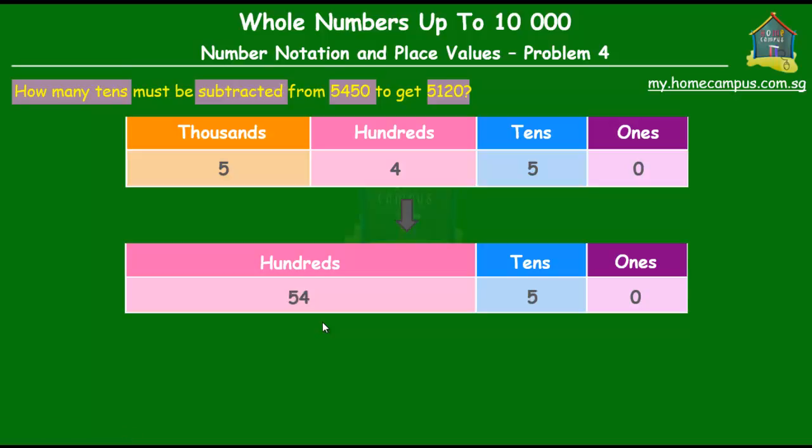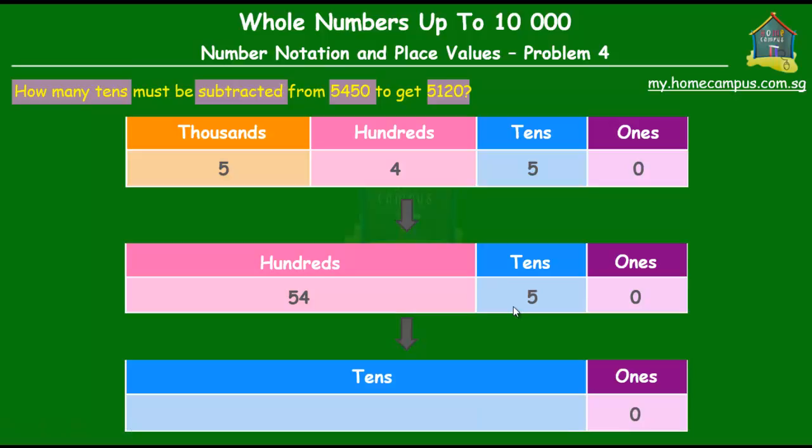Now, next since we have to find out how many tens there are in this number, we got to change the hundreds to tens. So now 100 is equal to 10 tens. So, 54 hundreds would then be equal to 540 tens. And eventually, we know that 540 tens plus 5 tens is equal to 545 tens.